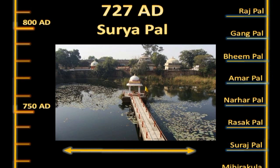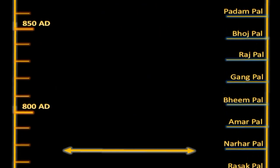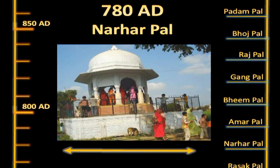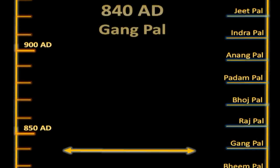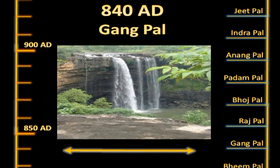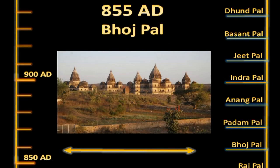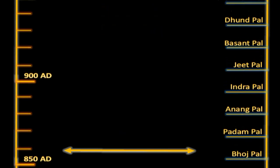King Surajpal ruled 36 years, his son Rasakpal 1 year, and his son Narharpal ruled 11 years and died in a hunting expedition. Narharpal raised the Mahadeva temple and founded Narhar Tela village. He was followed by Amarpal, and then Bheempal, who raised the Bhimeshwar Mahadeva temple. Bheempal ruled 36 years, followed by Gangpal who ruled 21 years and built the famous Gangola Lake. His son Rajpal ruled 10 years, followed by Bhojpal who ruled 9 years and built the famous shrine of Chatur Bhujaraj — a manifestation of Lord Krishna, built on a single stone. Bhojpal was followed by his son Padampal, who ruled 9 years, and then a long list of illustrious rulers.